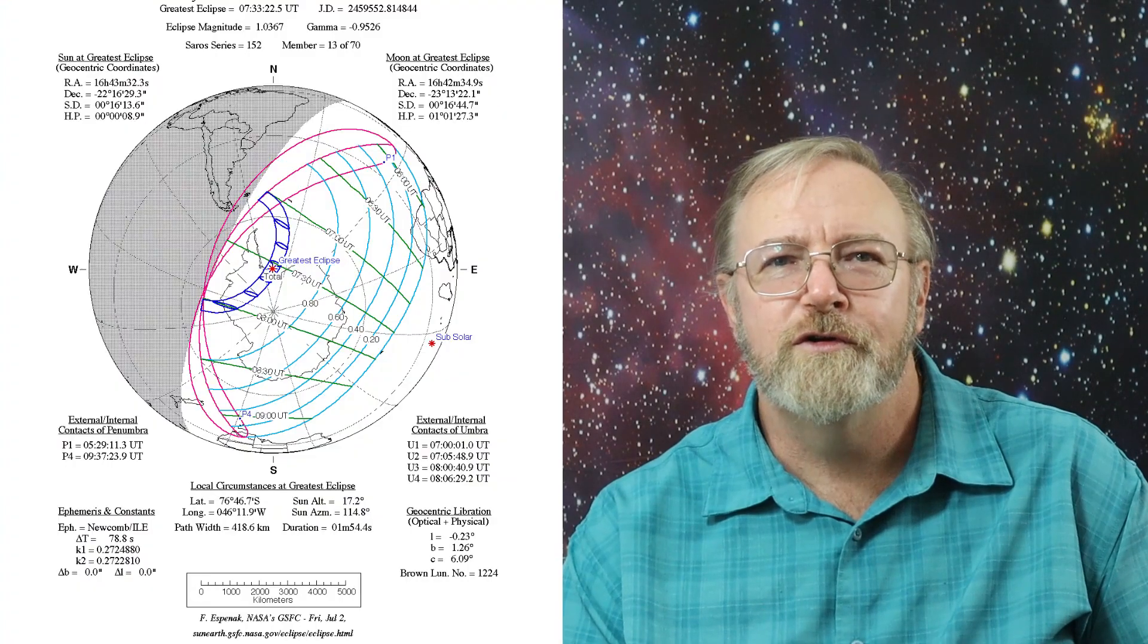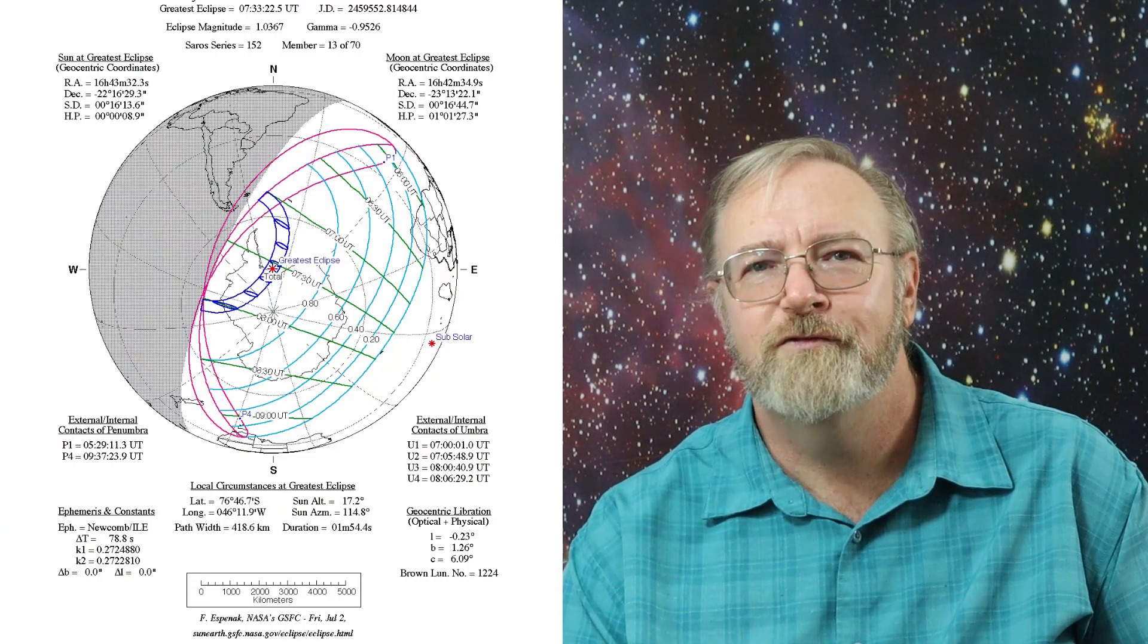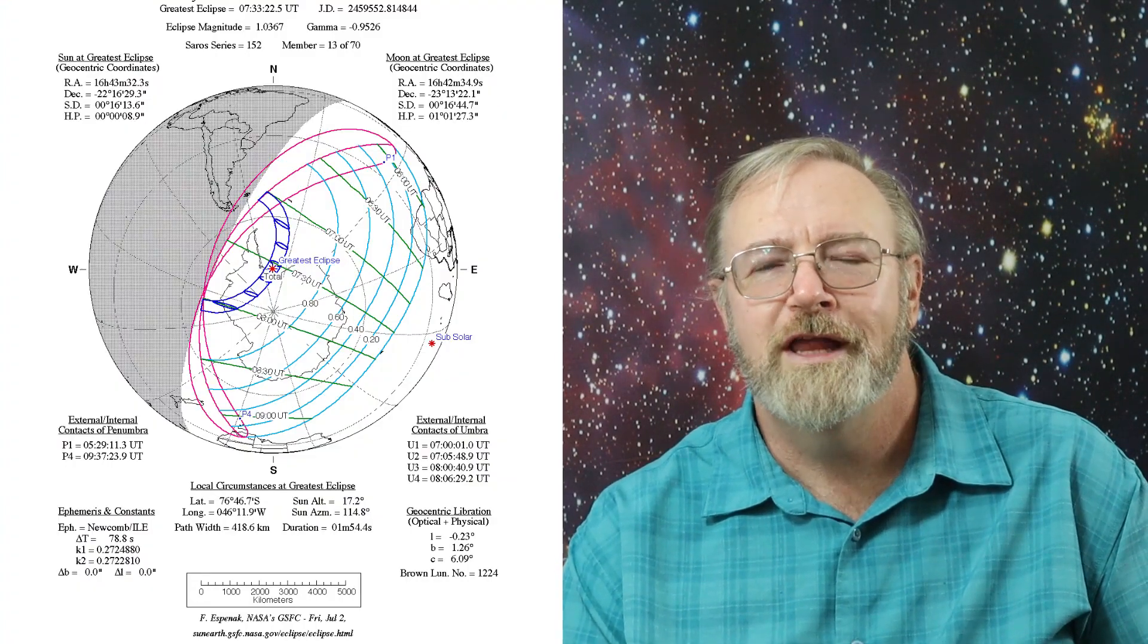This new moon will also produce a total solar eclipse visible inside a narrow track that crosses West Antarctica and the Ross Sea. A partial eclipse should be visible over the rest of Antarctica, South Africa, Tasmania, and the South Atlantic.